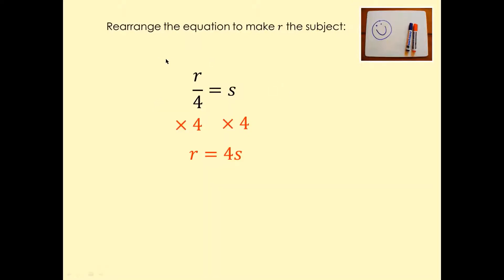In this question, you've got r over four, and we want to make r the subject. This is divide, so times by four on both sides. And that's going to give r equals 4s.